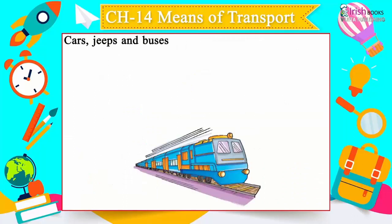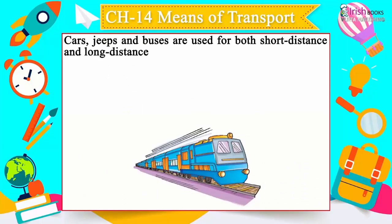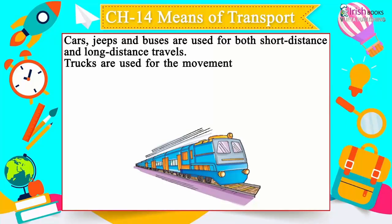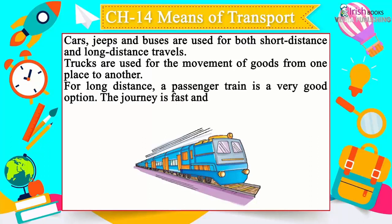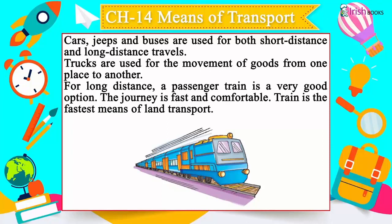Cars, jeeps, and buses are used for both short distance and long distance travel. Trucks are used for the movement of goods from one place to another. For long distance, a passenger train is a very good option. The journey is fast and comfortable. Train is the fastest means of land transport.